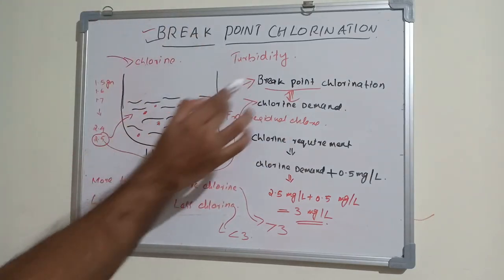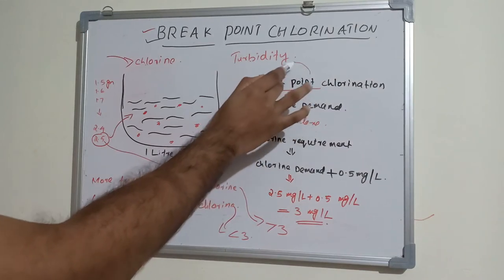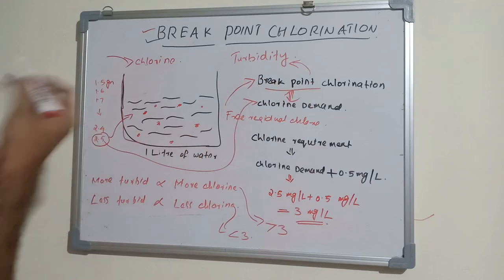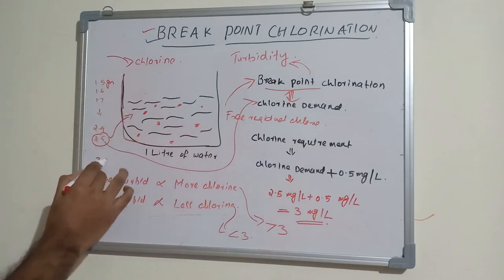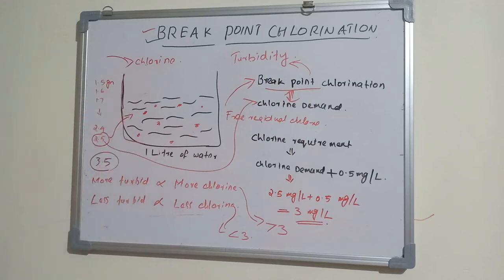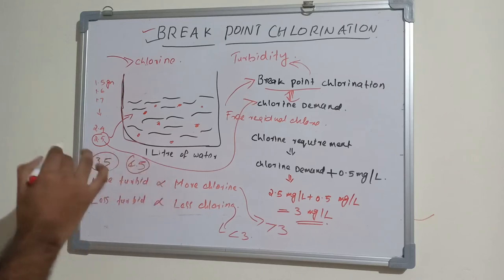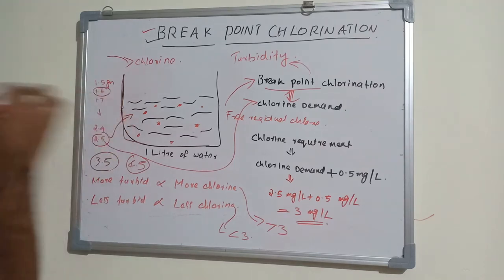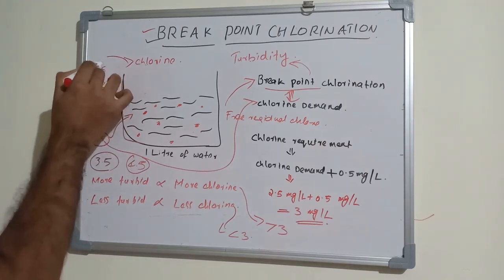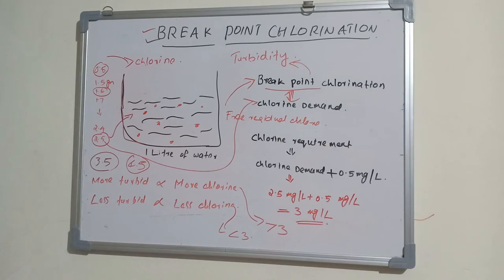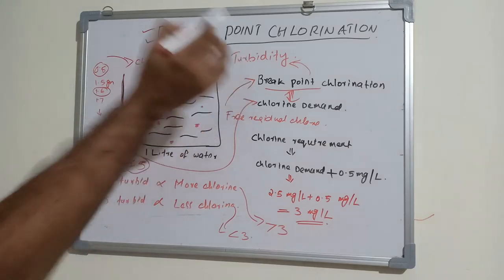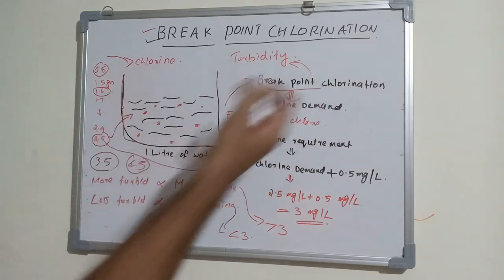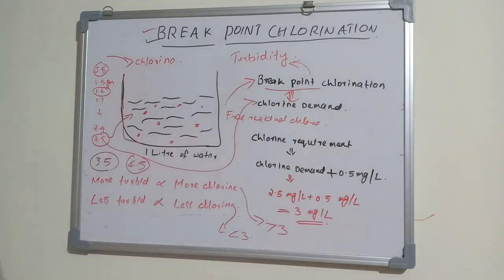Breakpoint chlorination depends on turbidity. If the water is very dirty, more chlorine is needed, so the breakpoint may be reached at 3.5 or even 4.5 grams. If the water is very less turbid — clearer water — it may reach breakpoint at 1.6 or even 0.8 grams. It all depends on how dirty the water is.